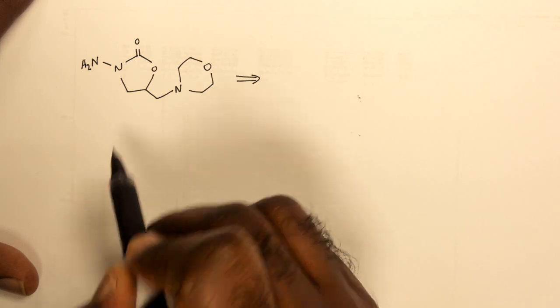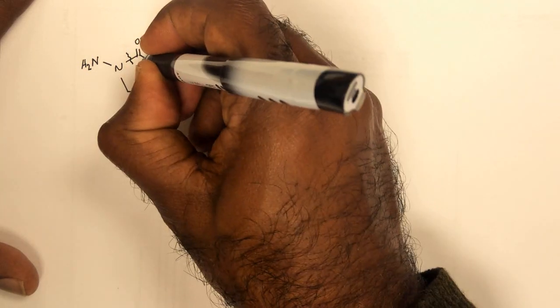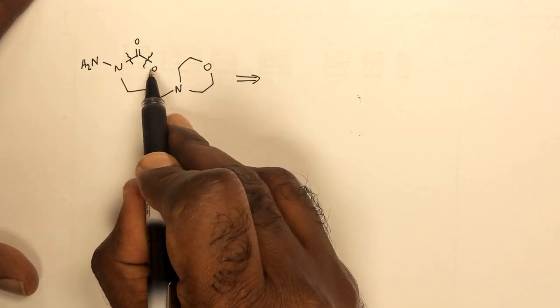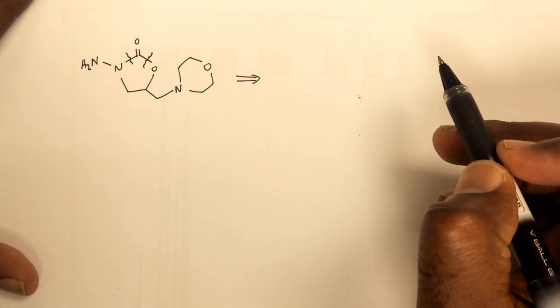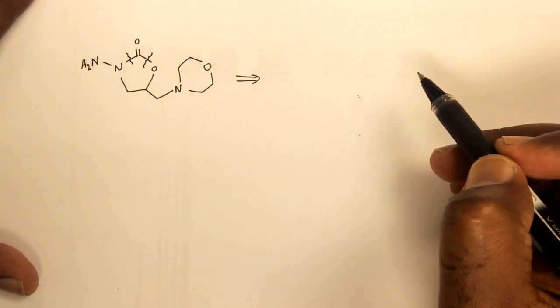In order to do that, we have to disconnect next to the nitrogen and we can disconnect next to the oxygen at the same time. Because the attack of both these nucleophiles onto the carbon atom of the carbonyl will lead to this carbonate structure.